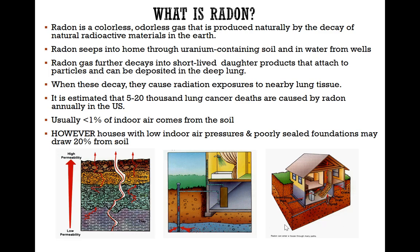With that knowledge we can start approaching the topic of radon. So what is radon? Radon is a colorless, odorless gas that is produced naturally by the decay of natural radioactive materials in the earth. Radon seeps into homes through uranium-containing soil and in water from wells — those are major sources of radon.